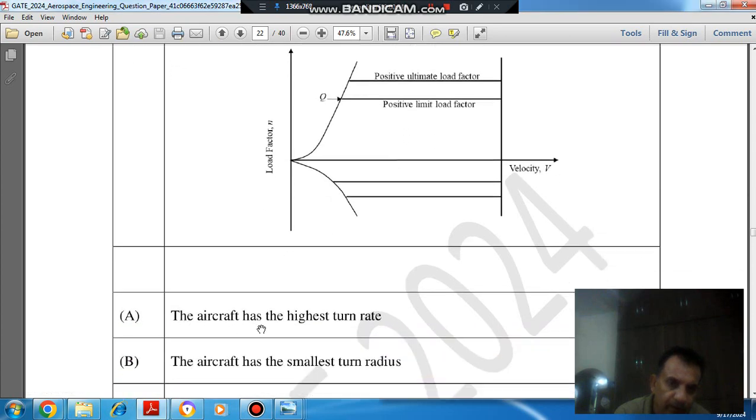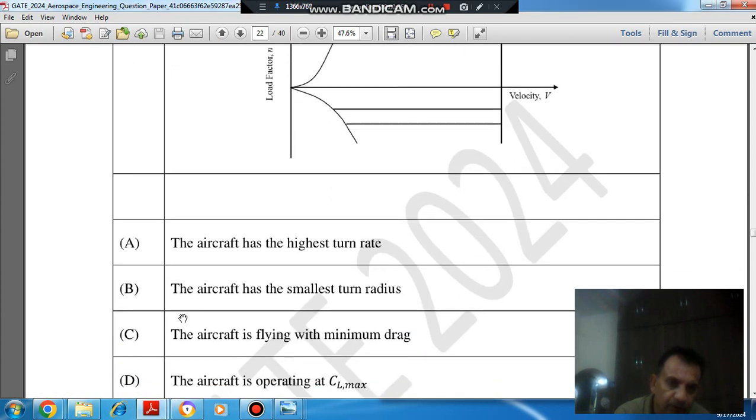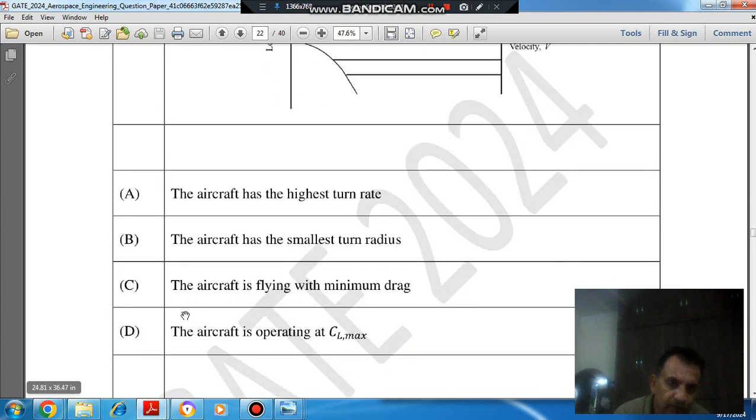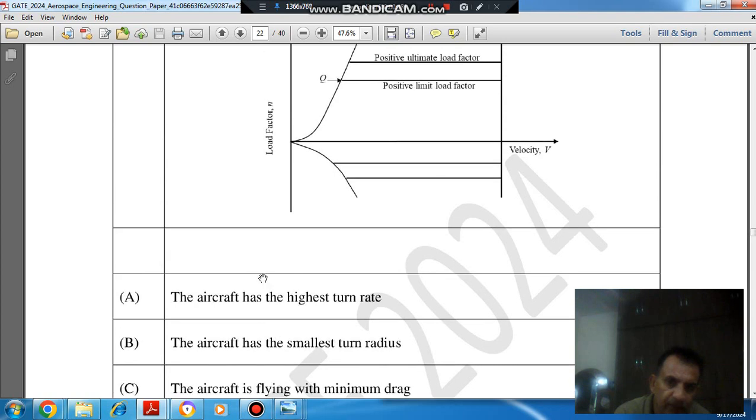Option A, the aircraft has highest turn rate. Option B, the aircraft has smallest turn radius. And option C, the aircraft is flying with minimum drag. And option D, the aircraft is operating at CL max.